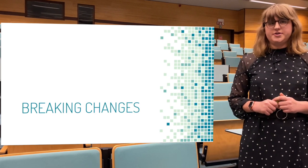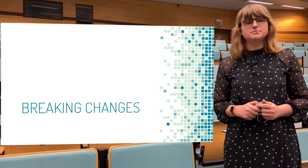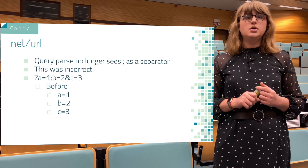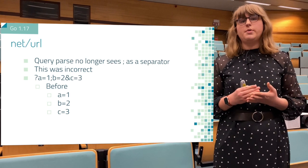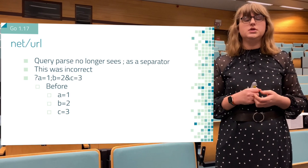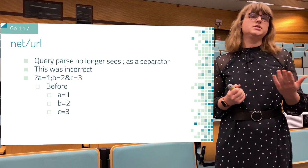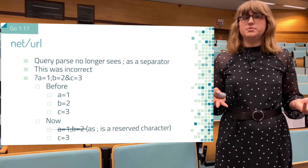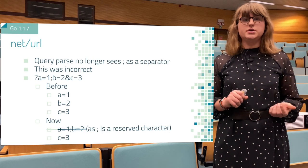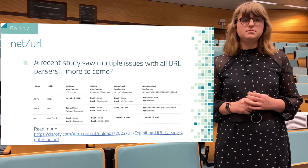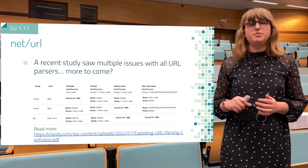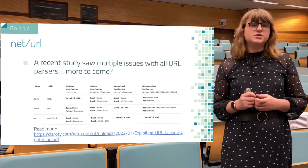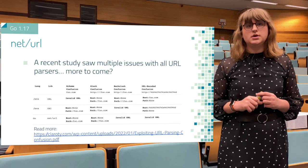There are also some breaking changes in the standard library. The first one is in URL parsing: the URL query parser now no longer sees the semicolon as a separator, as this was simply incorrect behavior according to the standard. Previously a query string like 'a=1;b=2&c=3' would parse nicely as a=1, b=2, c=3. Now it will parse only as c=3 — the first argument is just skipped, because the semicolon is a reserved character that should be encoded. There's also been a new study published which looks at URL parsers in almost every language — and spoiler alert, they're almost always wrong.